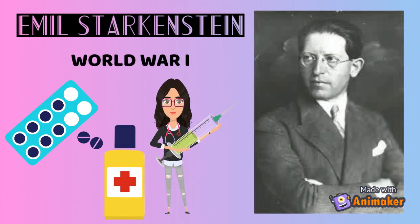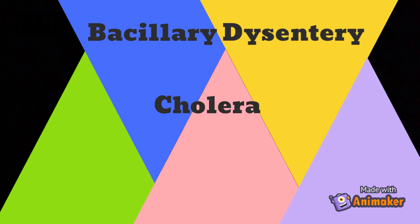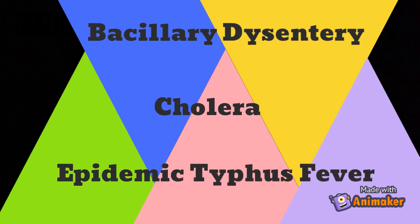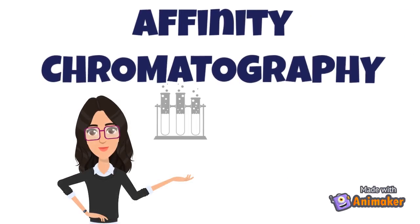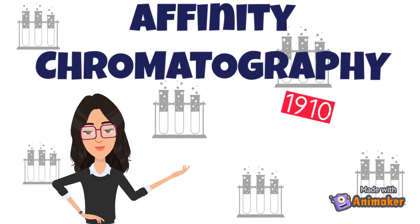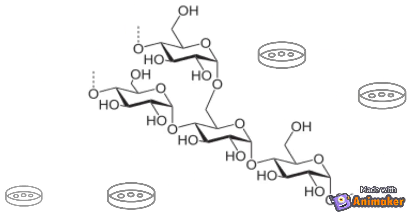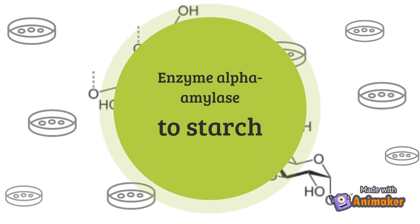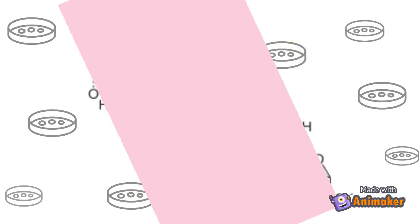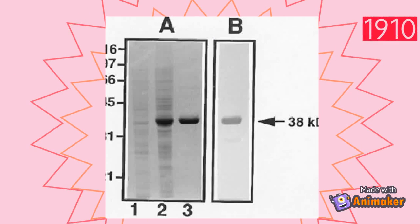Emil Starkenstein, during World War I, took advantage of his knowledge of experimental pharmacology for new approaches to the treatment of bacillus dysentery, cholera, and epidemic typhus fever. Eventually, the first use of the idea of affinity chromatography was by Starkenstein. He demonstrated specific binding of the enzyme alpha-amylase to starch as a means of purification of the enzyme in 1910.